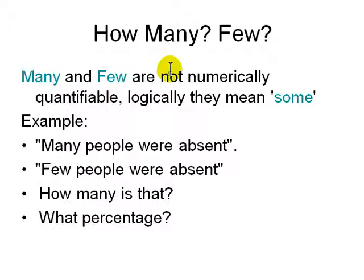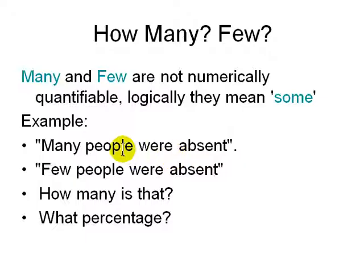How many does 'some' stand for? What does 'many' mean? What does 'few' mean? From a mathematical point of view, 'many' and 'few' are not numerical numbers — they are not quantifiable, they just mean 'some.' Many people are absent, few people are absent — how many is that? What percentage? From a logical point of view we still don't know. Even in English it can be ambiguous: when you say many people are absent, how many people are absent? It's not clear.